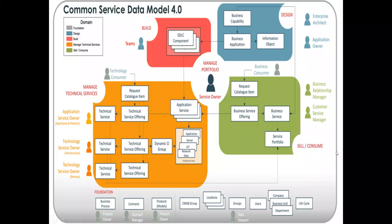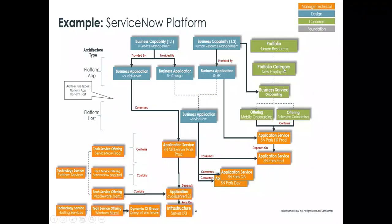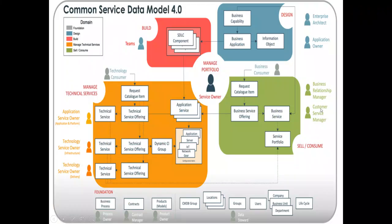Sell and Consume is the area which is available for the business user. This is the place, this section, which is for the market — what you are selling to the customer. On the business side I have a business consumer, and internally I have a BRM (Business Relationship Manager) and a Customer Service Manager who manages services and builds relationships with customers. Under this, the request catalog is similar to what we discussed. Key components are business service and service portfolio, and also technical services supporting the portfolio indirectly — shown as dotted lines, not hard lines.